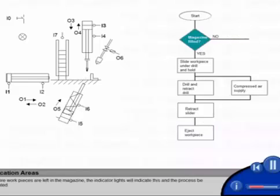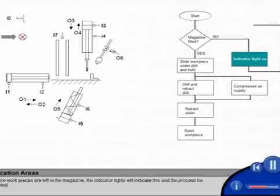Then the slider moves back and the finished workpiece is ejected. If no more workpieces are left in the magazine, the indicator lights will indicate this, and the process be interrupted.